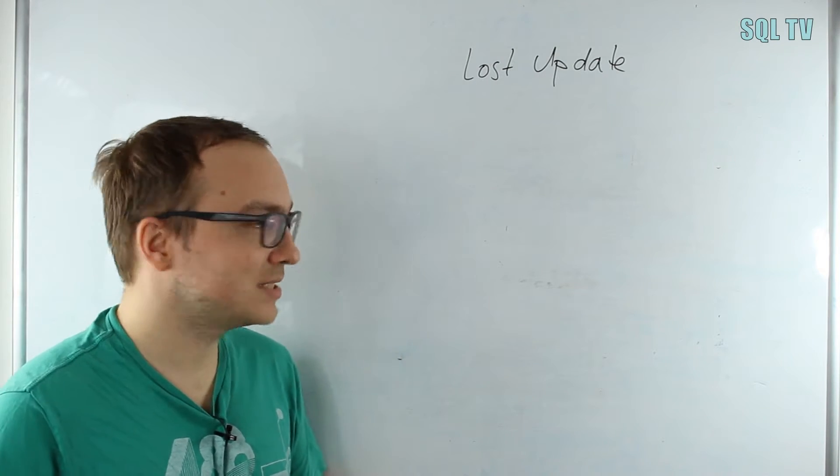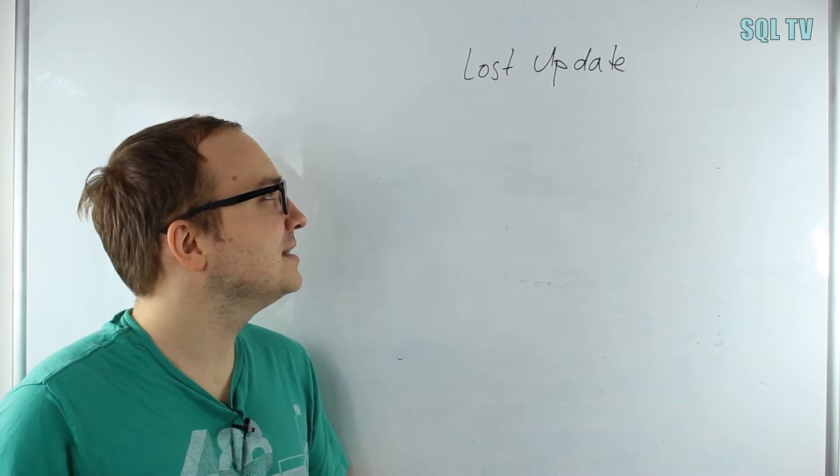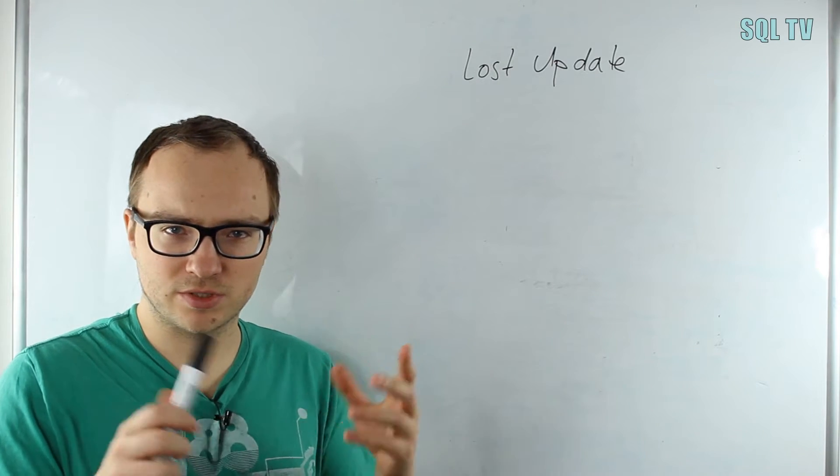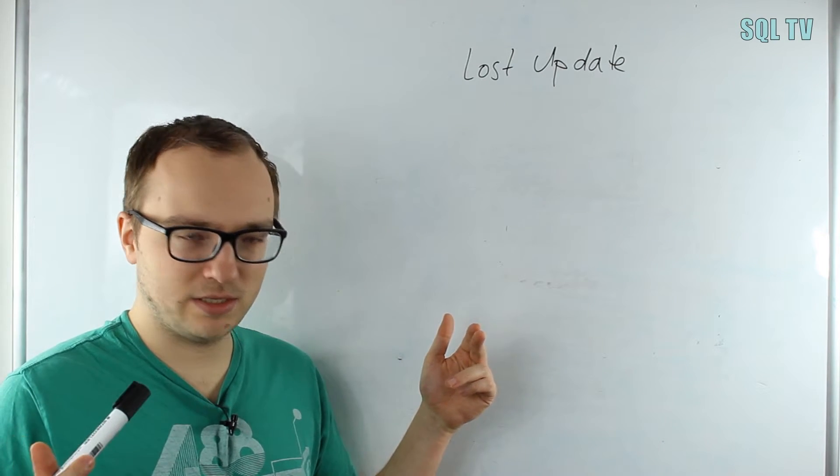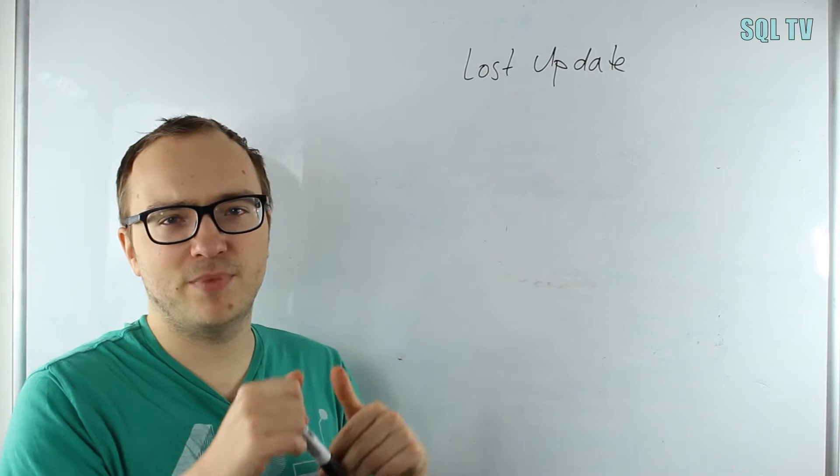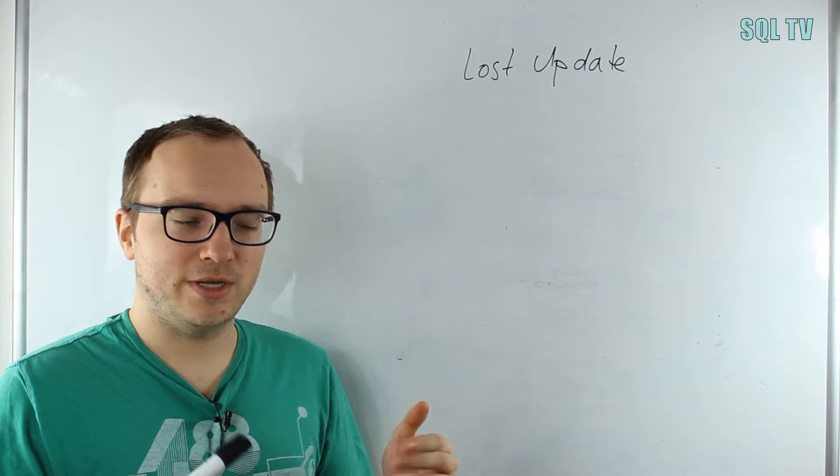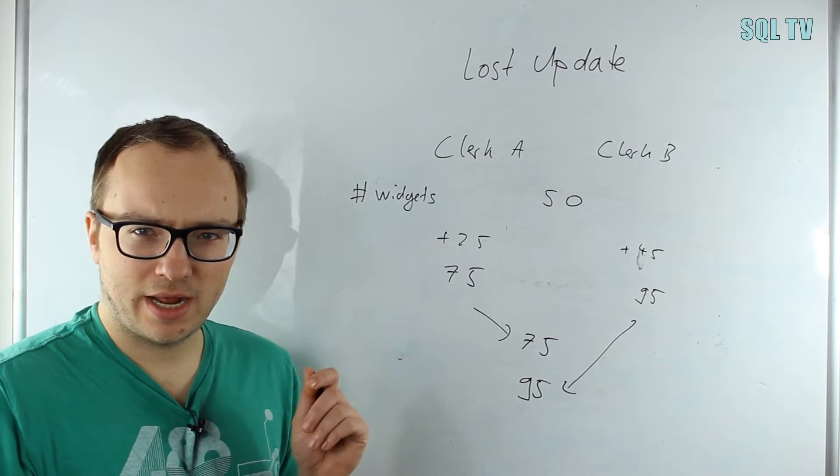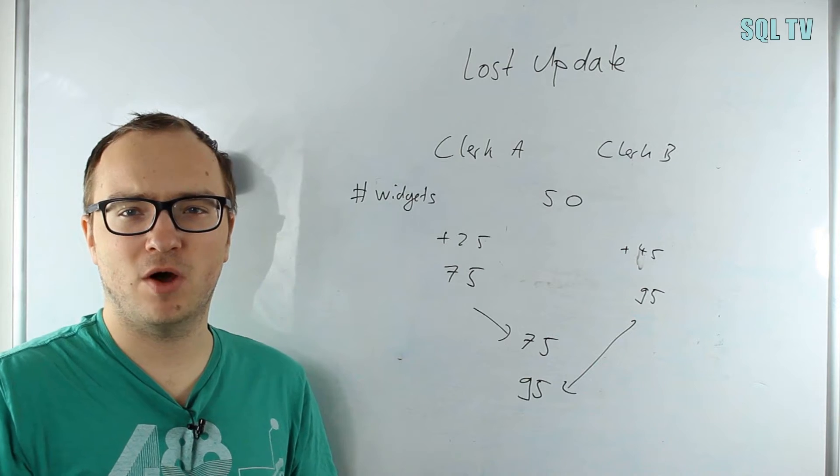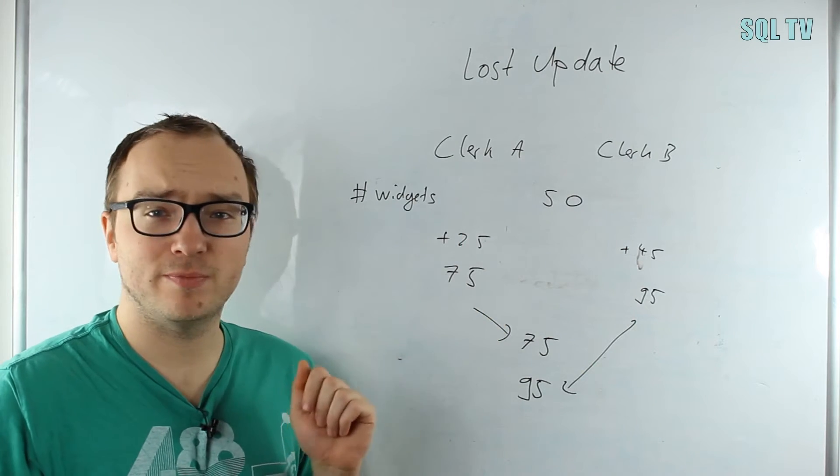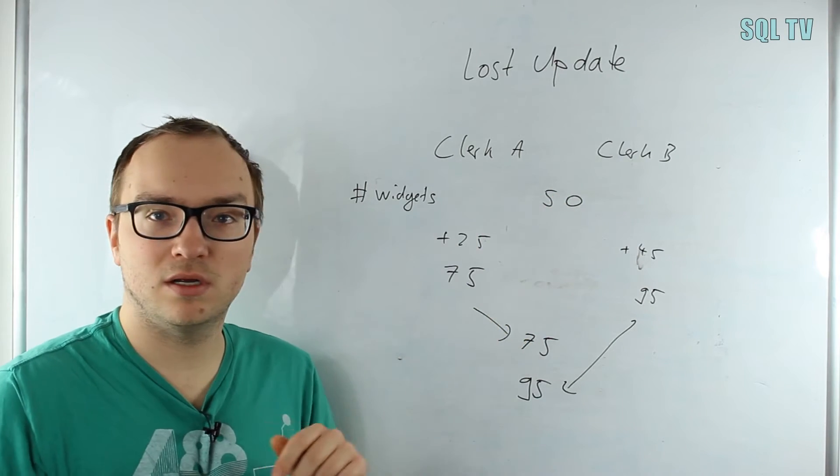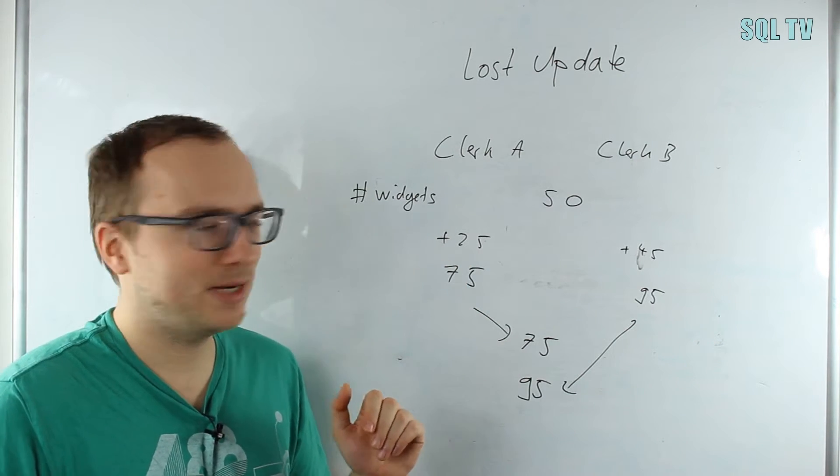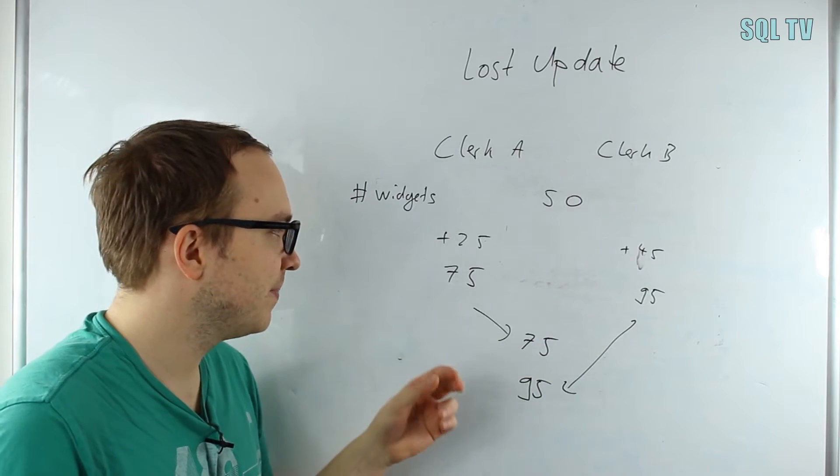The first one is the lost update problem or lost update phenomenon. This happens when two processes at the same time read data from the same source or row, then they update the value internally but differently, and then they write back the updated value at the same time or almost at the same time, so that one process overrides the update of another process. For example, we have two clerks and they receive shipments of widgets—the number of widgets is 50. At the same time, clerk A and B look and see 50 widgets. Clerk A gets another 25 and clerk B gets another 45 at the same time.